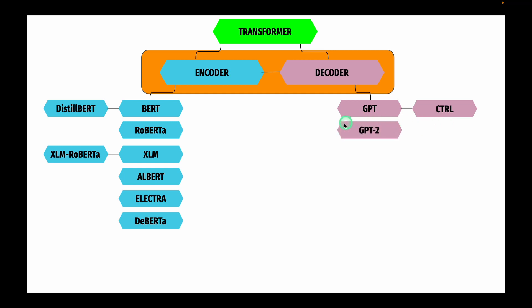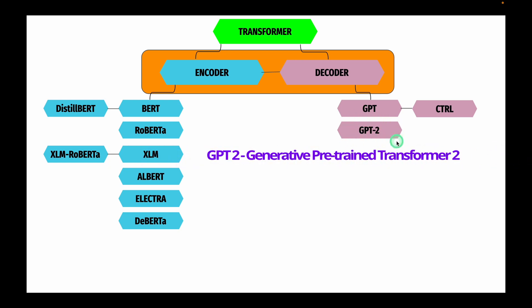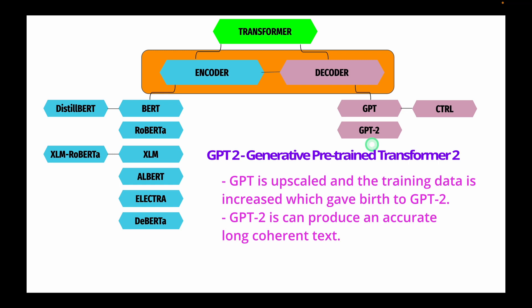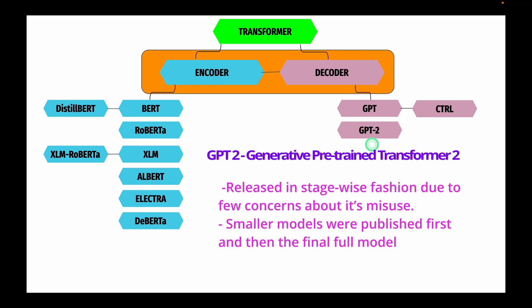The next decoder-only model is GPT-2, inspired by its predecessor GPT. GPT was upscaled and its training data was increased, giving birth to GPT-2. The highlight of GPT-2 is that it can produce long coherent text. GPT-2 was released in a staged fashion due to concerns about its misuse — smaller models were published first, followed by the final full model.